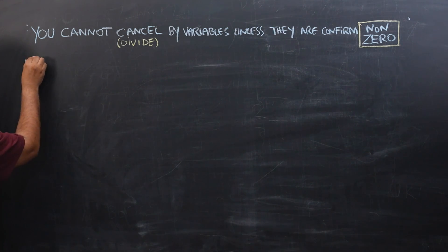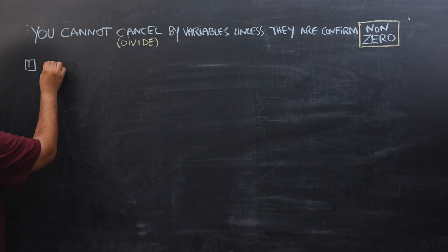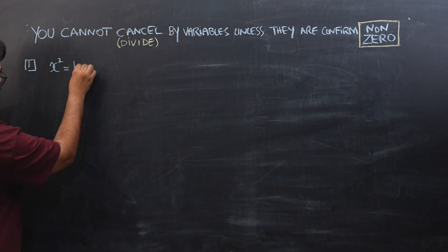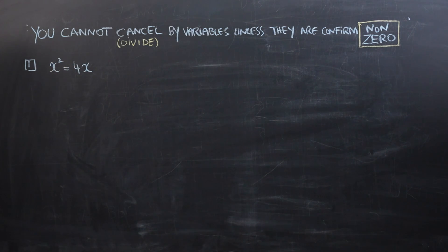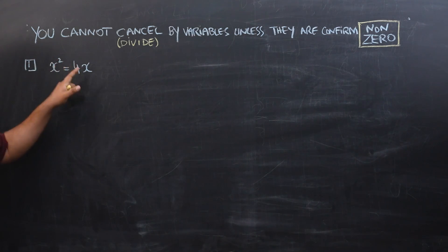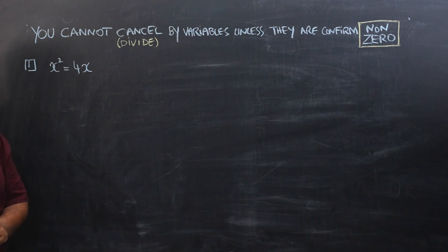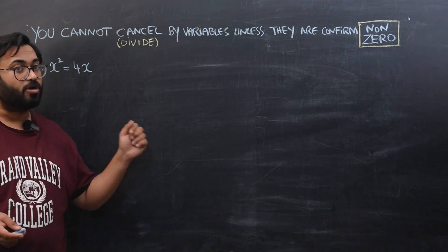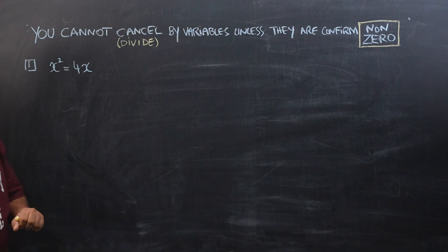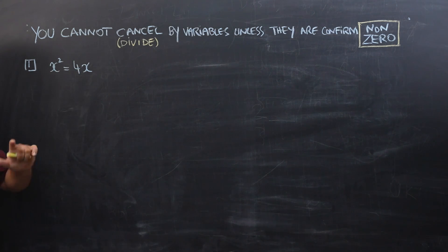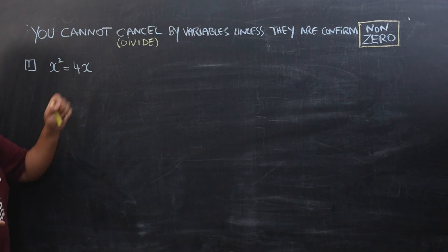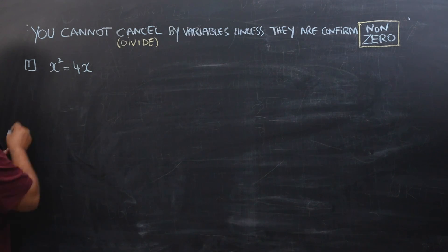Number one — a very basic example: x² = 4x. Can we cancel this x with this x and just get x = 4? If your answer is yes, you're making a horrible mistake that I want you to stop making so that you can excel in your exams at any level of maths.